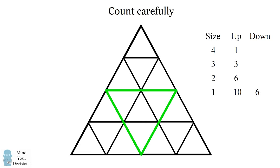Now we count the number of triangles of size 2 facing down, and there's exactly 1. Now as you can see, this is the largest size triangle that's facing down. So there are no triangles of size 3 or 4 facing down.